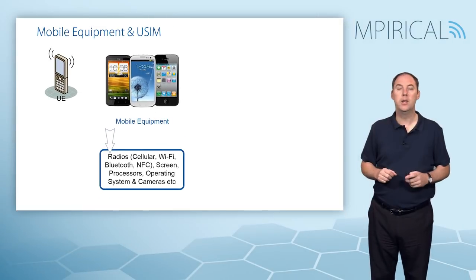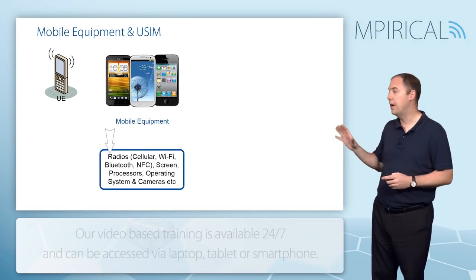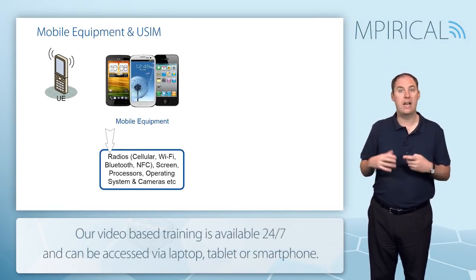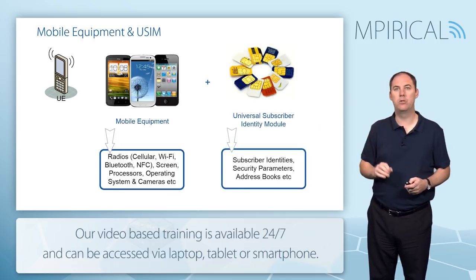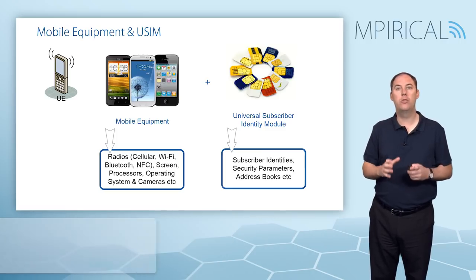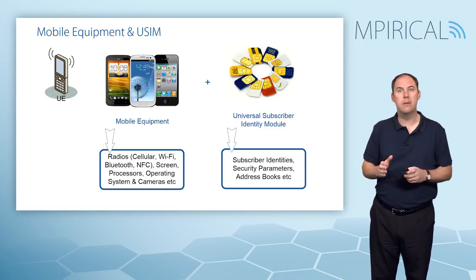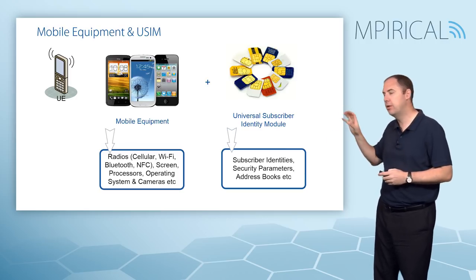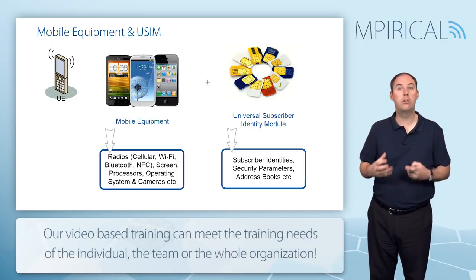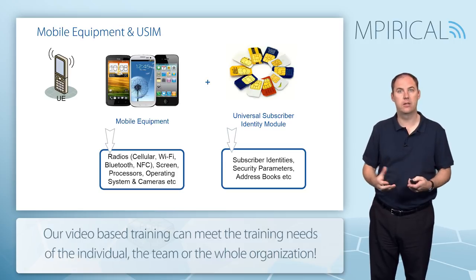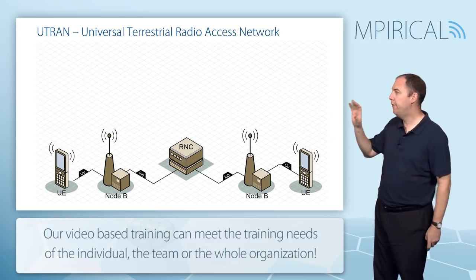The mobile is split into two parts. The first is the mobile equipment — this is all the hardware, including the radio, processors, screen, and camera. The other part is known as the subscriber identity module, specifically in UMTS it's called the USIM — Universal Subscriber Identity Module. This includes subscription information, security information, and can also include address books.